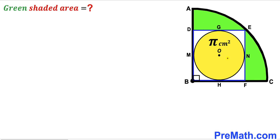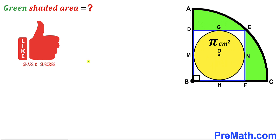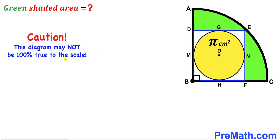Welcome to Premath. In this video we have a yellow shaded circle with center O fully inscribed in a blue square DEFB, as seen in the diagram. In turn, this blue square DEFB is inscribed in a quarter circle with center B, resulting in two green shaded regions. The area of the yellow shaded circle is given as π centimeters squared, and our task is to calculate the combined green shaded region area. Please give a thumbs up and subscribe, and keep in mind this figure may not be 100% true to scale.